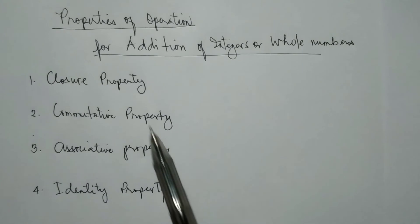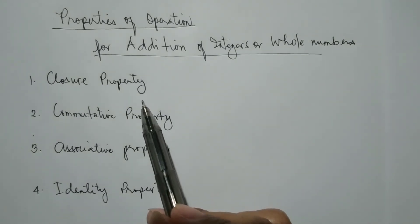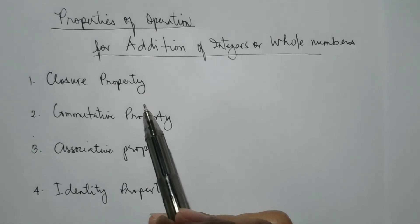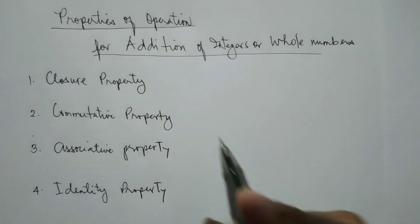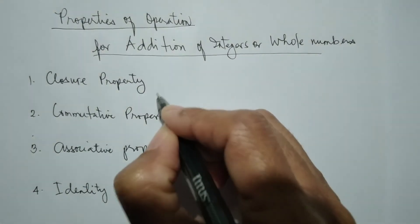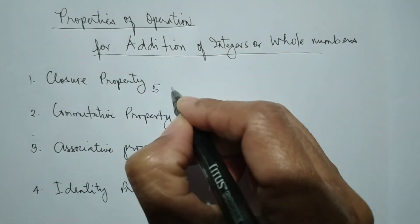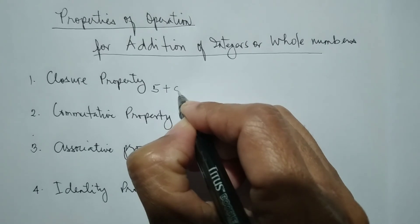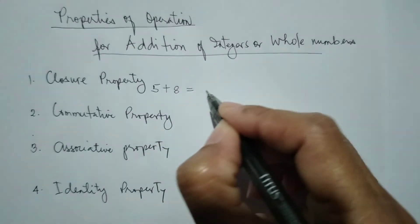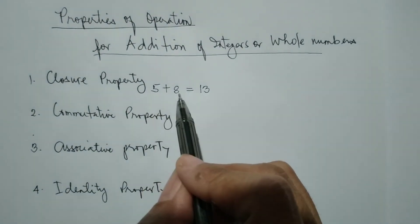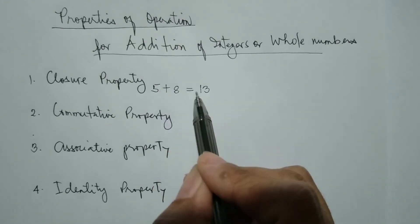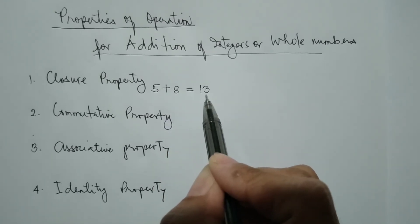First, we have the closure property. It means that if we are going to add two whole numbers or two integers, the sum is also a whole number or an integer. For example, we have 5 plus 8 is equal to 13. So, 5 and 8 are whole numbers and the sum is also a whole number, which is 13.